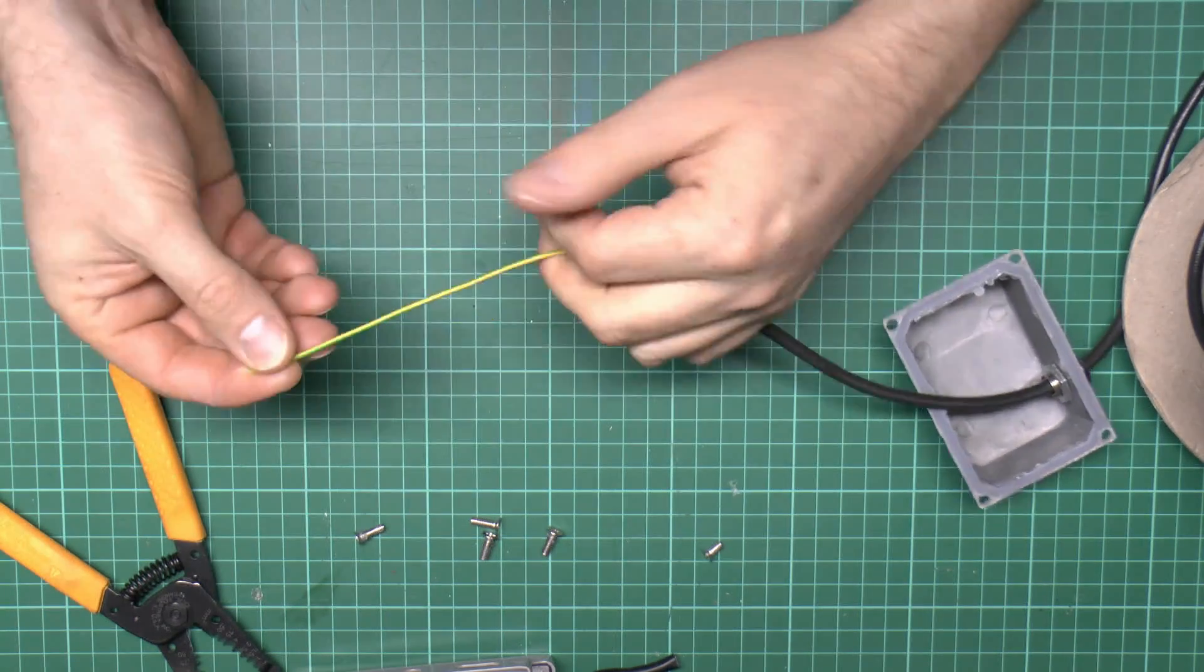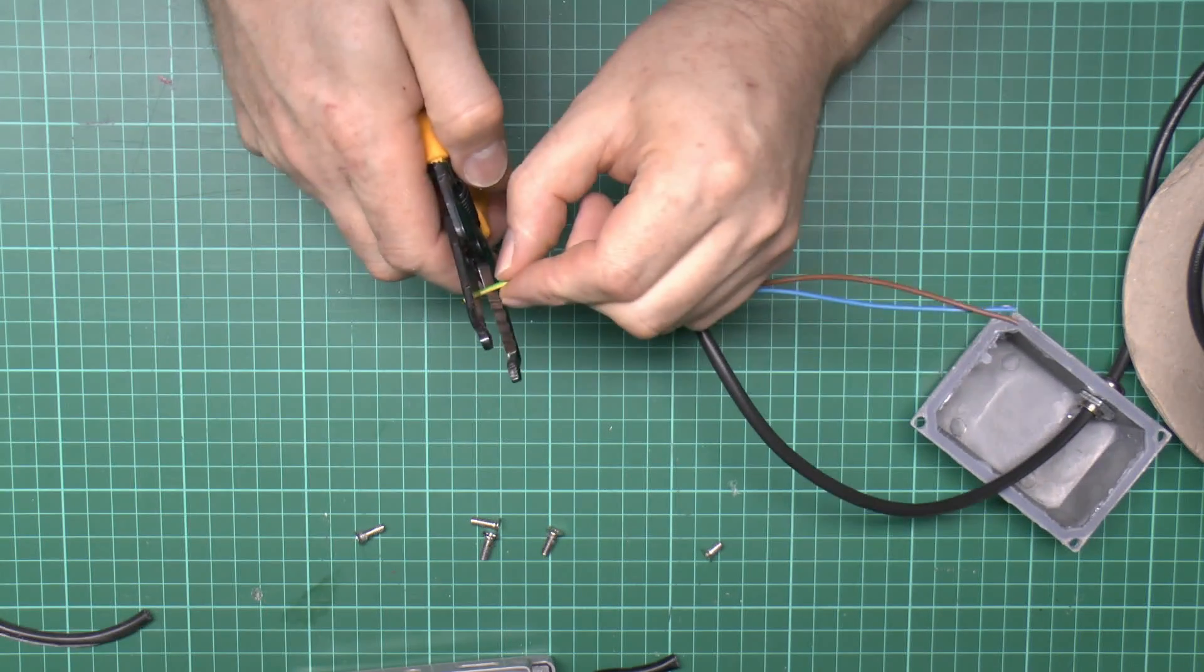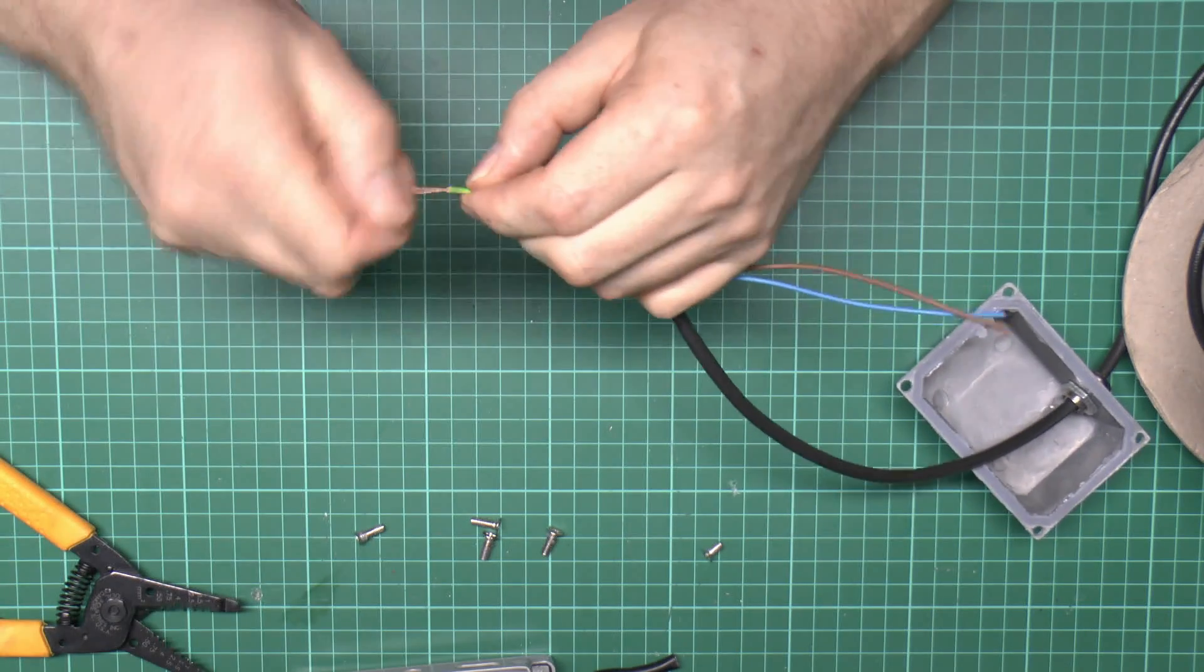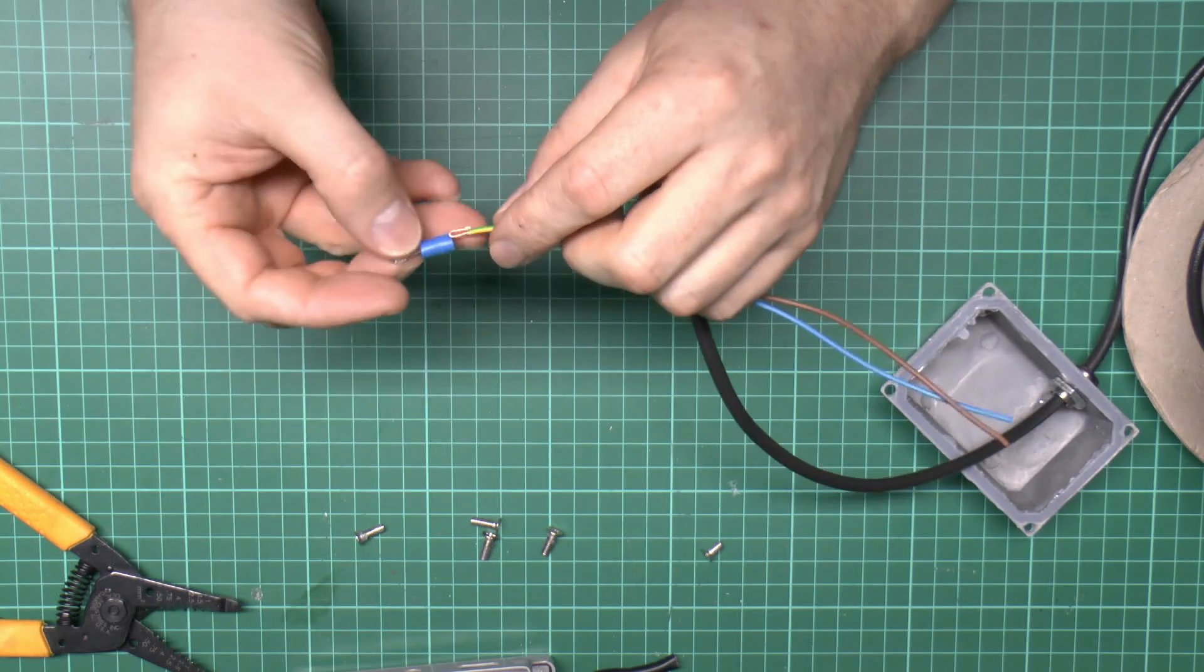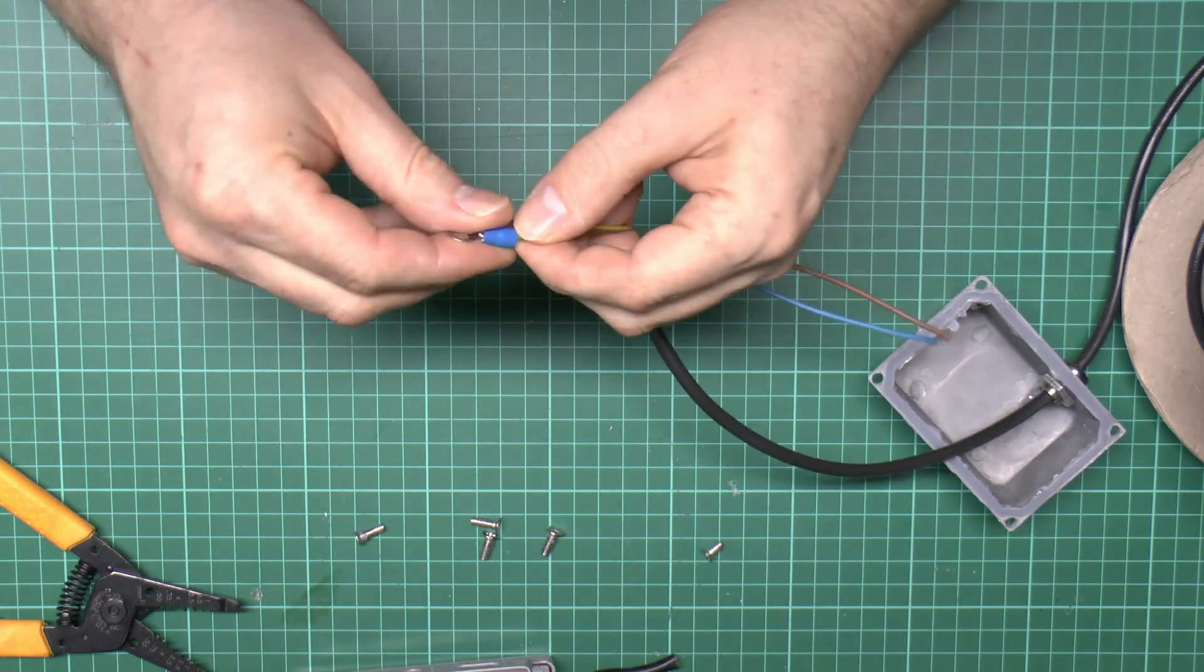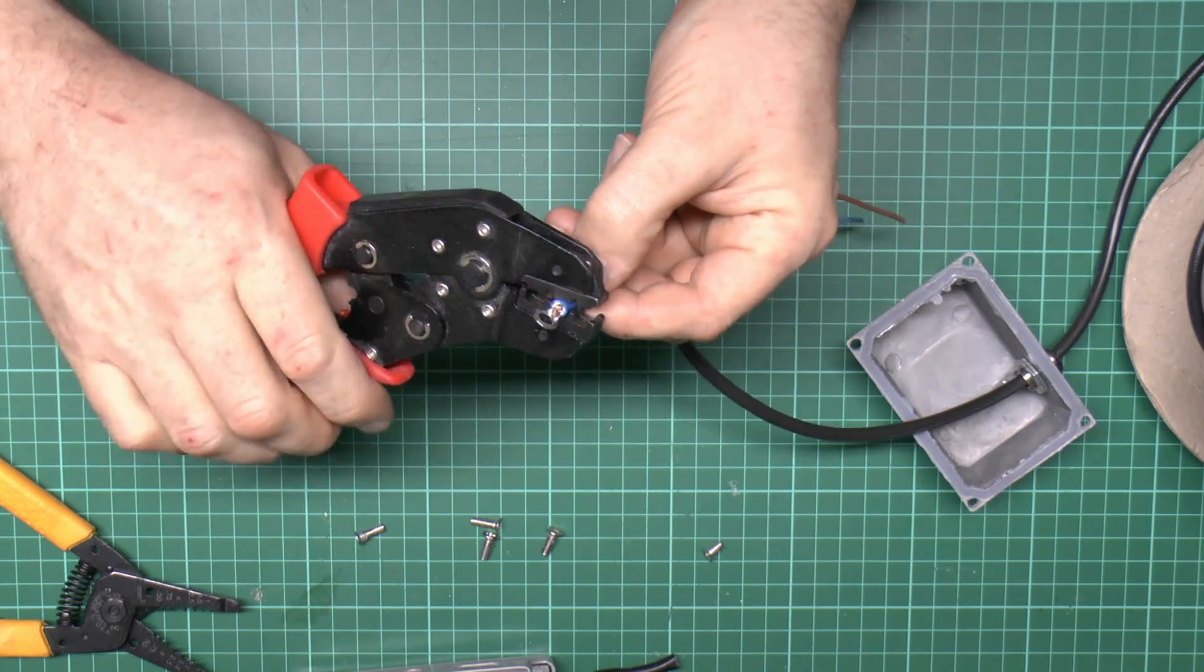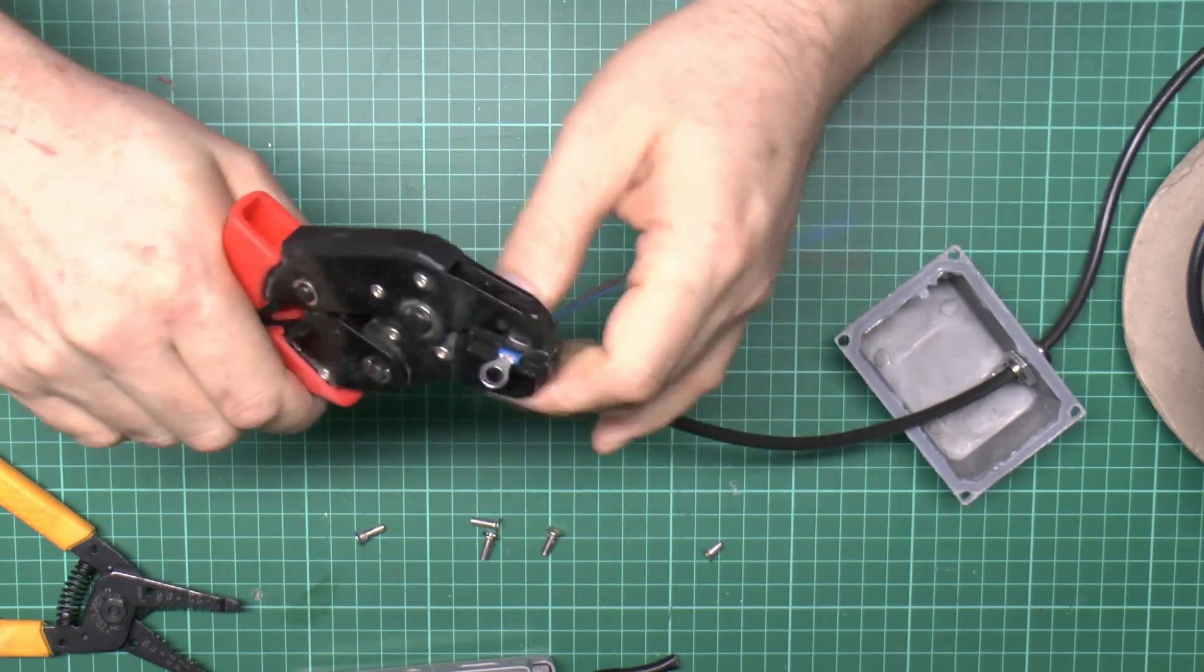At this end here we just need to put an appropriate lug on the end of the earth there. We'll just strip that wire. The lugs I have are slightly too big, so we'll just fold that over and then crimp that on. Ideally this would be a red one, but this will do just as well.